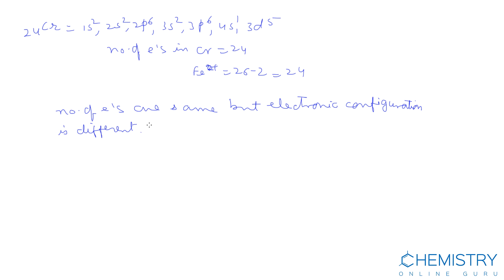So, Fe²⁺ and chromium are not isoelectronic.